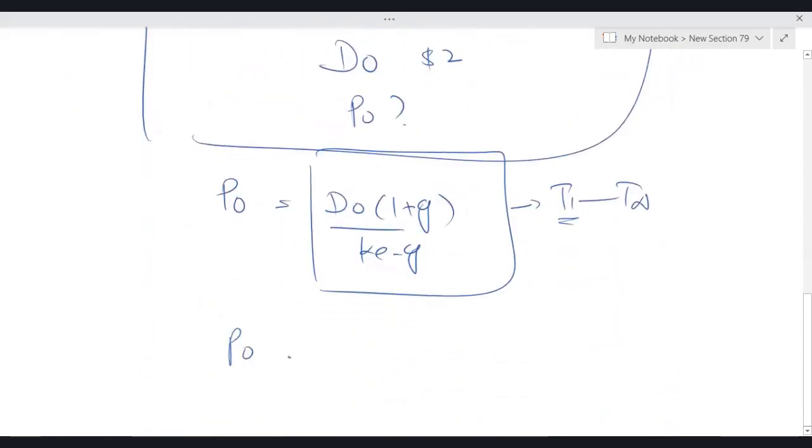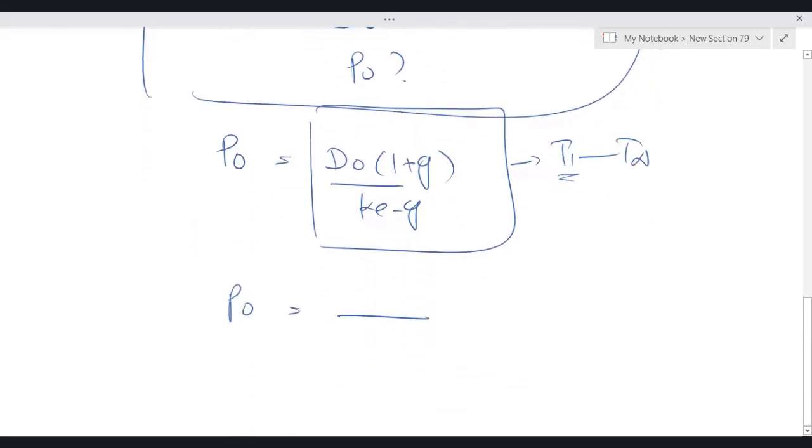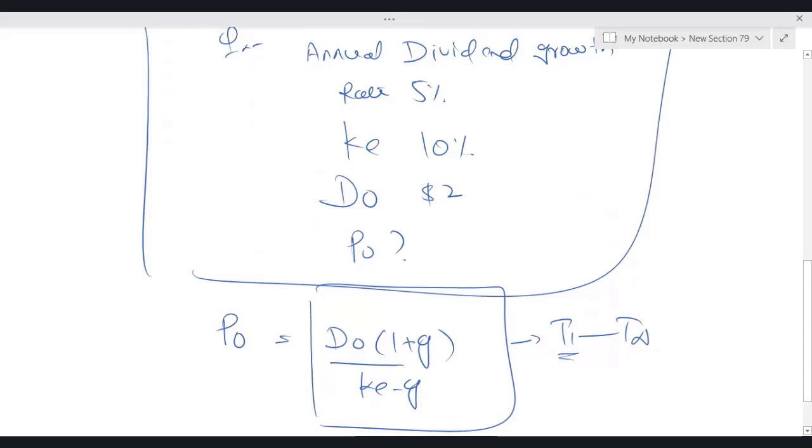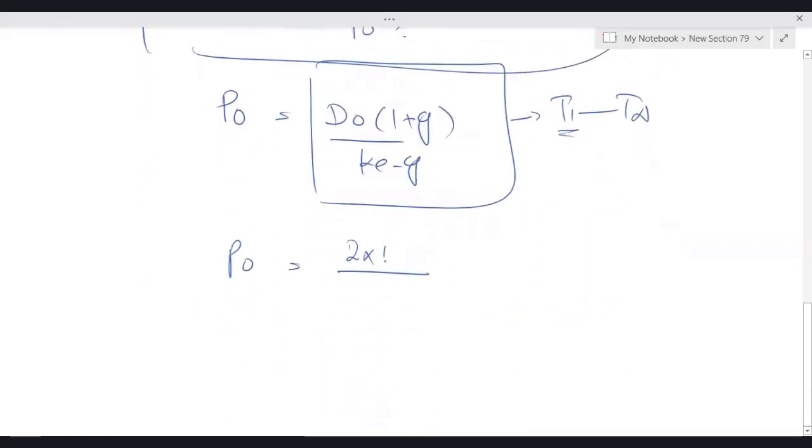So P0 equals D0 is $2, growth rate is 5 percent. 2 multiplied by 1.05 divided by 0.05, I'm getting 42.